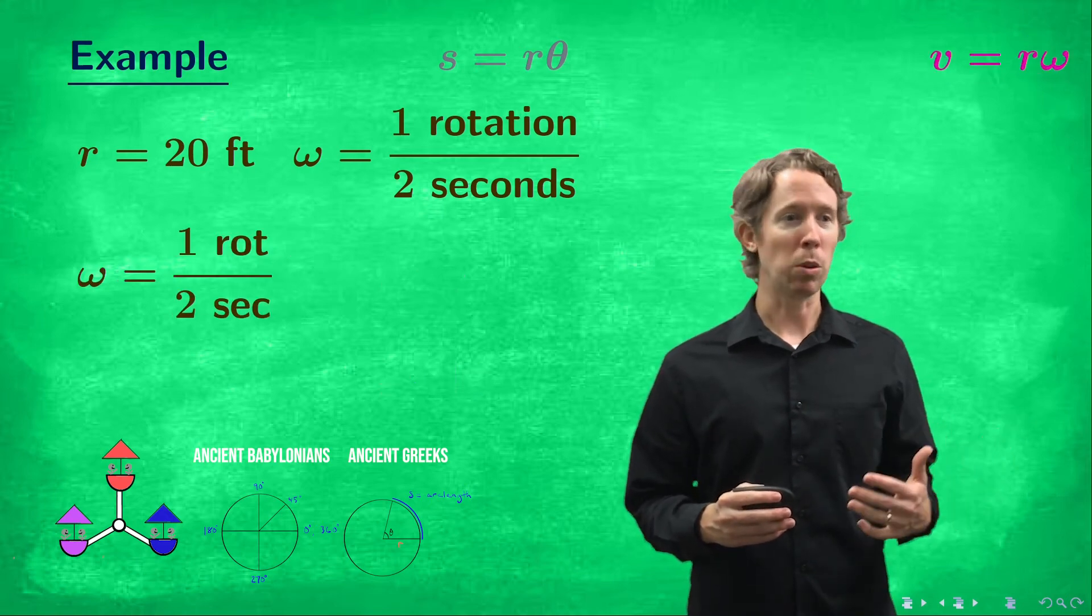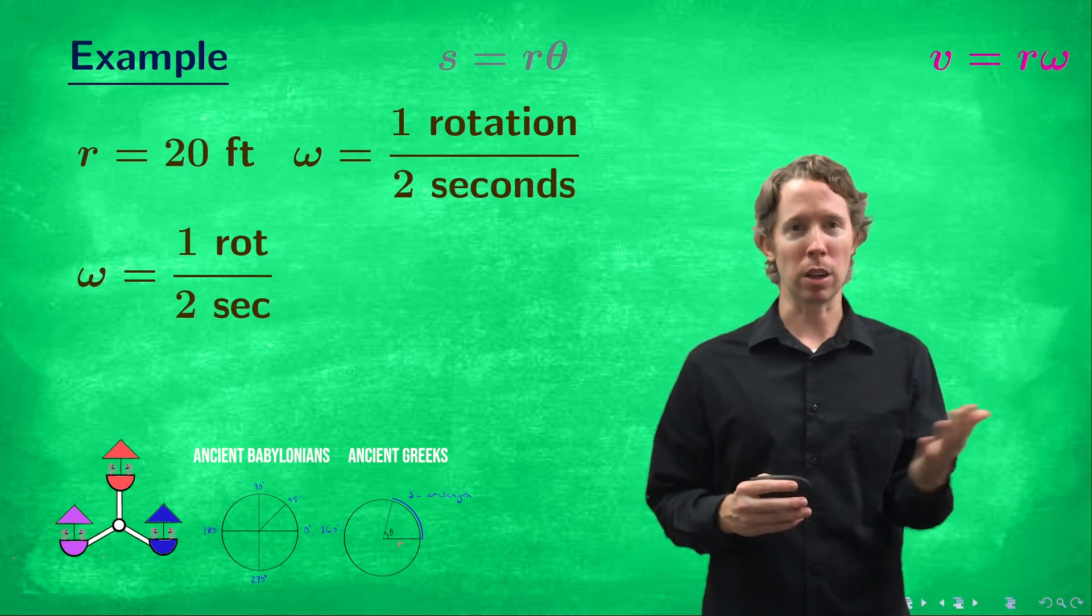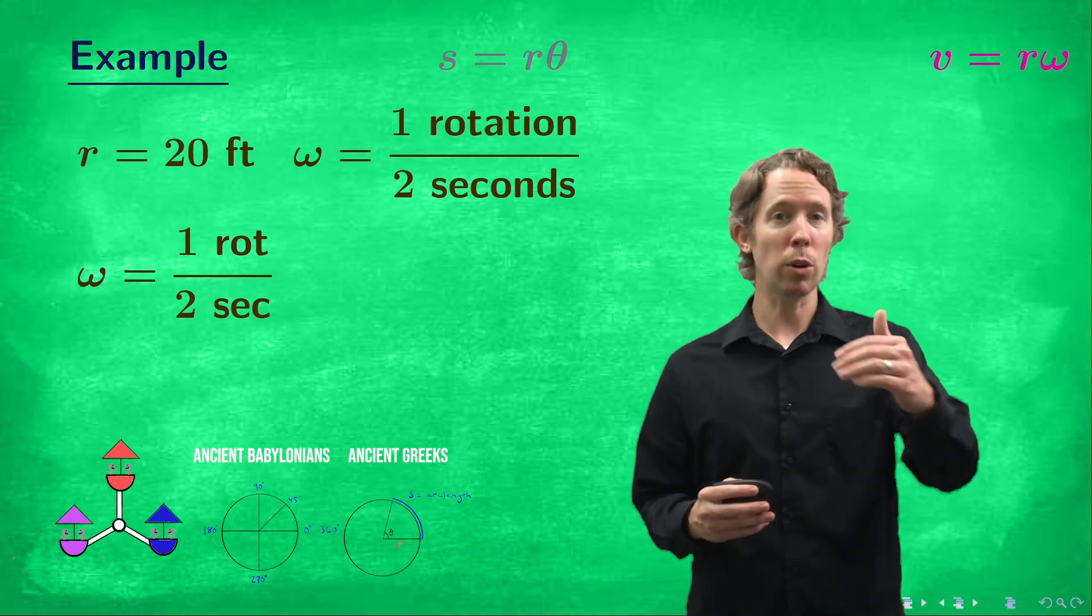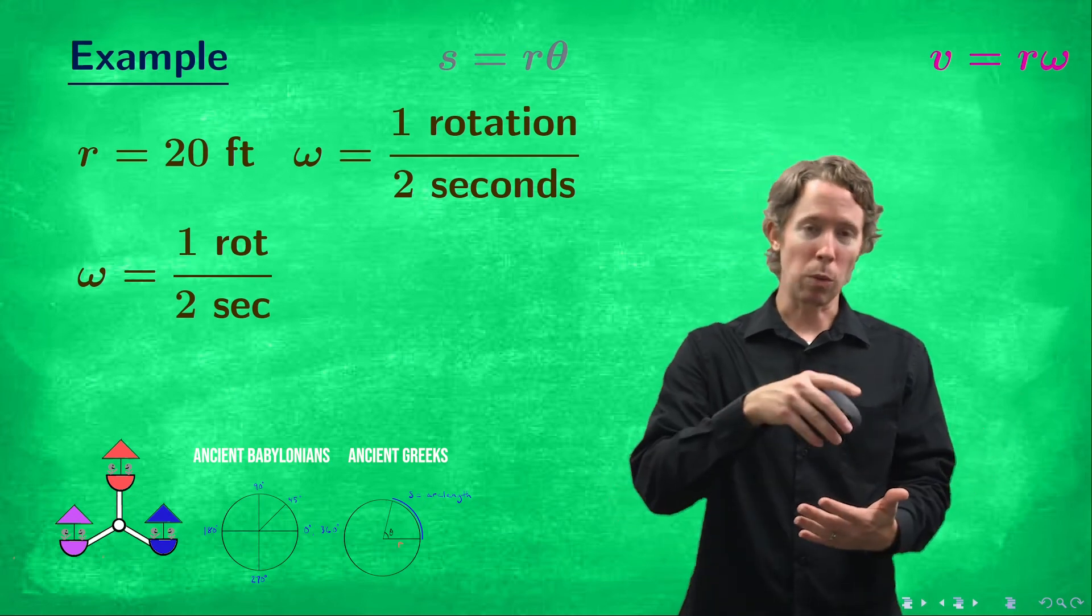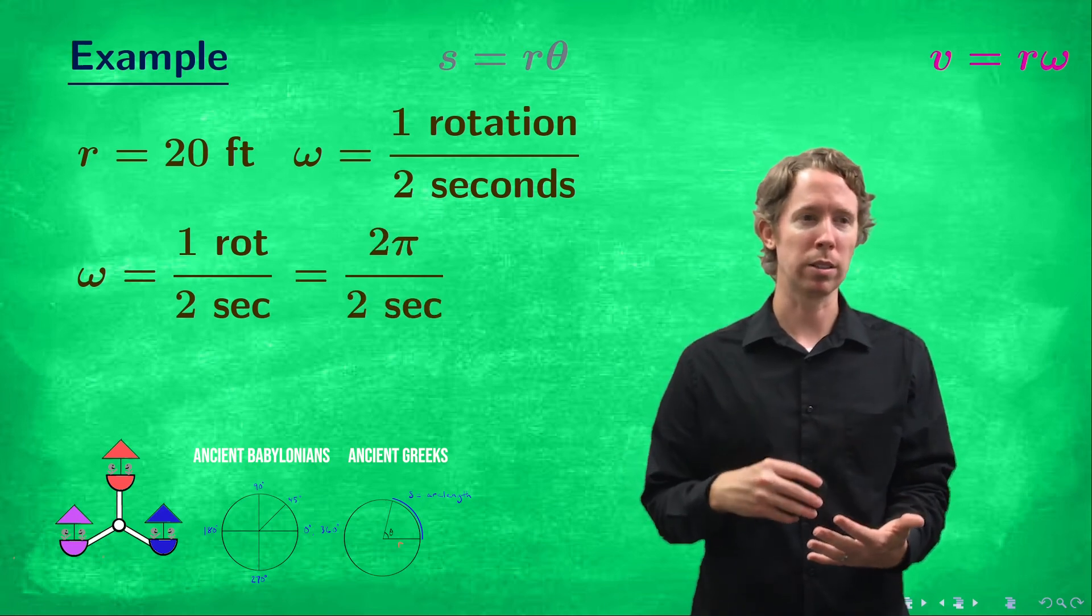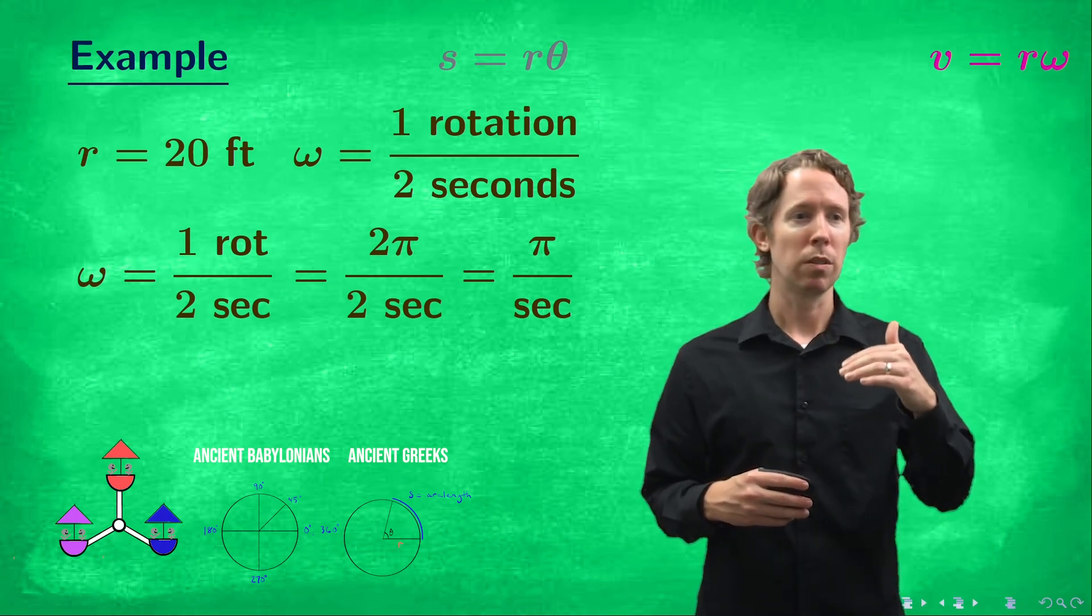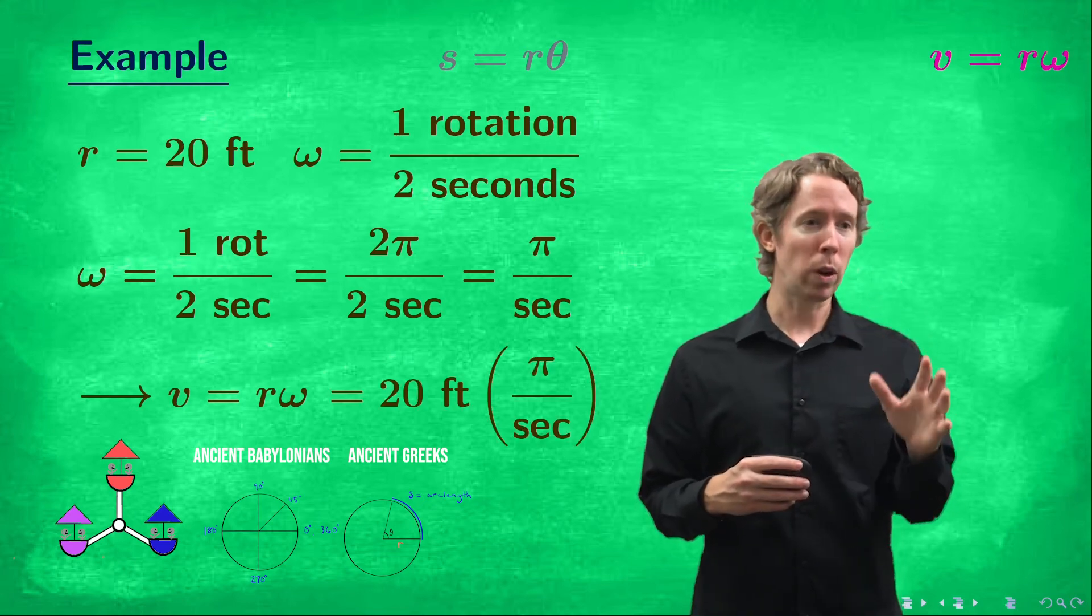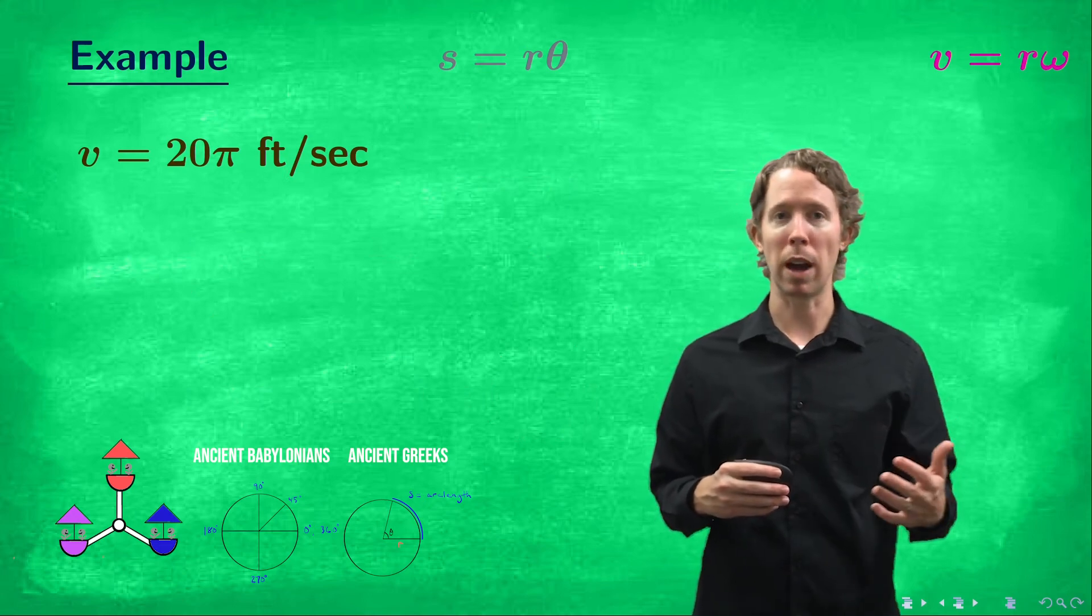So in our example, we're going to take our radius of 20 feet, but our omega is in terms of rotations right now. We just need to convert it into radians. So one rotation for every two seconds is how many radians for every two seconds? One half of a rotation is pi radians. So one full rotation is two pi radians. And then the twos cancel. So our omega is pi radians for every second. So now the linear speed is just going to be 20 feet times pi radians per second. So 20 pi feet per second.